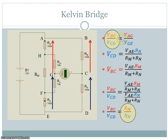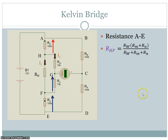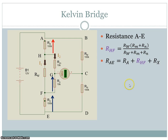For the next side we're going to look at VAG and VGE, which is a little more complex. To start the analysis, we first need to look at the total resistance between A and E. To do that we must first look at the resistance of this parallel network, which I'm calling RHF. In a parallel network, the total resistance is the product-over-sum rule. So the total resistance from A to E equals RA plus RHF plus Rx.